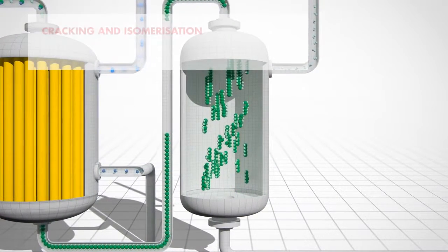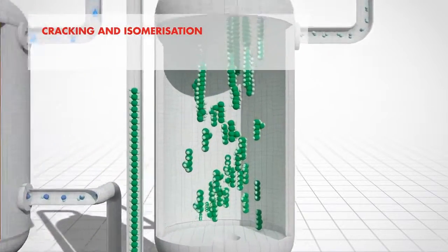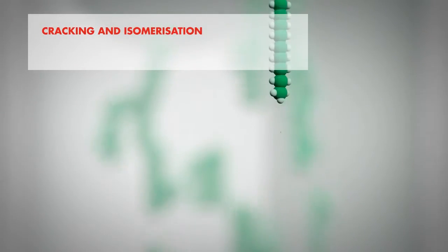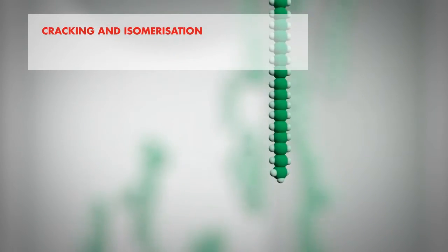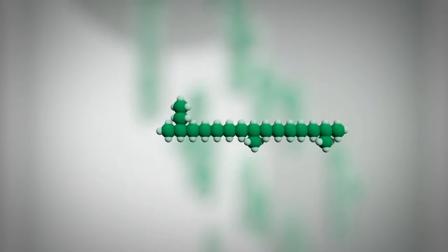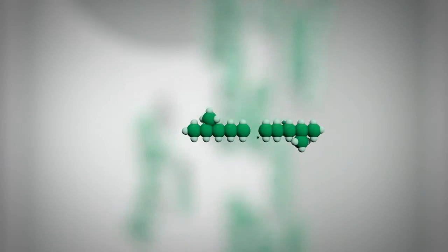The final stage is cracking and isomerization, which cuts the molecule chains into shorter lengths. This yields high-quality liquids such as diesel, kerosene, and lubricant oil.